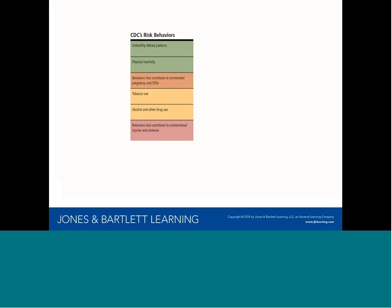The Centers for Disease Control and Prevention have identified these six risk behaviors as the most important things we need to be focusing on: unhealthy dietary patterns, physical inactivity, behaviors that contribute to unintentional pregnancies and STDs, tobacco use, alcohol and other drug use, and behaviors that contribute to unintentional injuries and violence. These six areas can easily be grouped into just four.